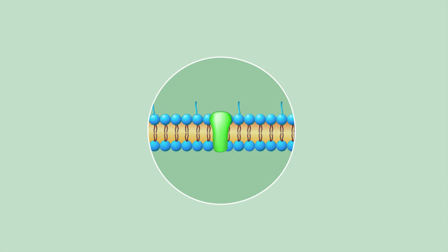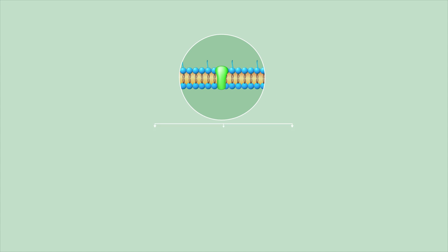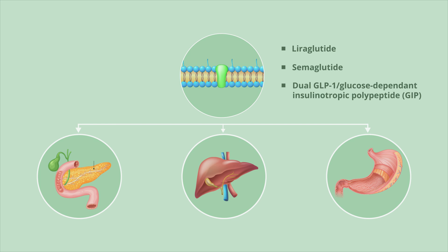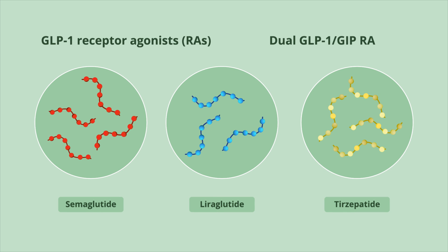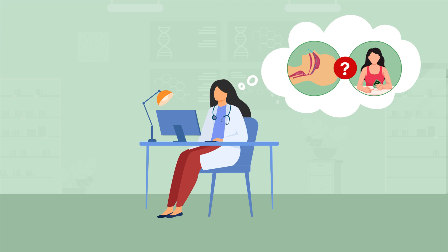Therapies such as glucagon-like peptide 1, or GLP-1, receptor agonists — for example, loraglutide and semaglutide — as well as the dual GLP-1 glucose-dependent insulinotropic polypeptide, or GIP, receptor agonist — for example, trisepatide — have offered more ways to treat obesity, type 2 diabetes, and now OSA. It remains unclear the exact impact the co-occurrence of OSA and type 2 diabetes has on the risk of adverse health outcomes, and how these medications may mitigate or reduce these risks.